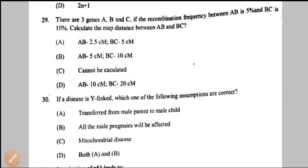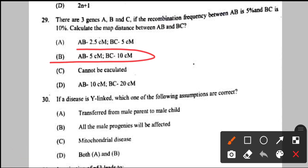Question number 29: three genes A, B, and C — recombination frequency between A and B is 5%, B and C is 10%. Calculate the map distance. Recombination frequency is equivalent to map distance, represented in centimorgans or map units. So A-B is 5 centimorgans and B-C is 10 centimorgans. The answer for question 29 is option B.